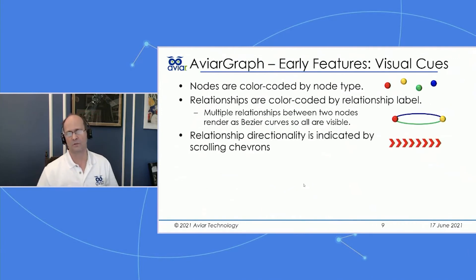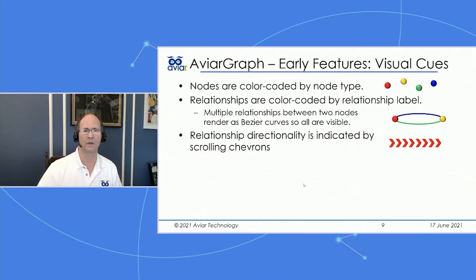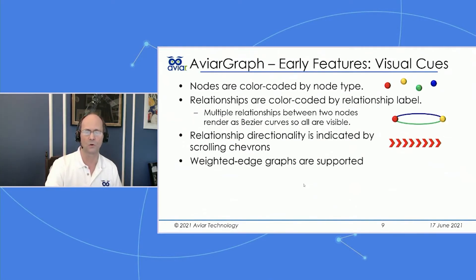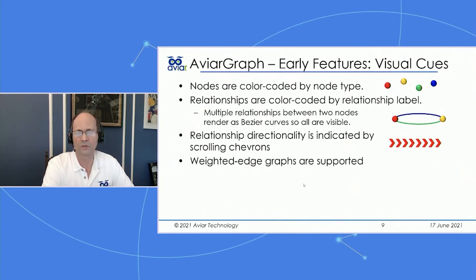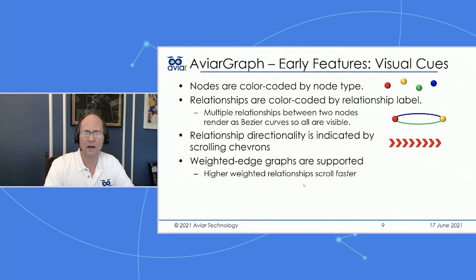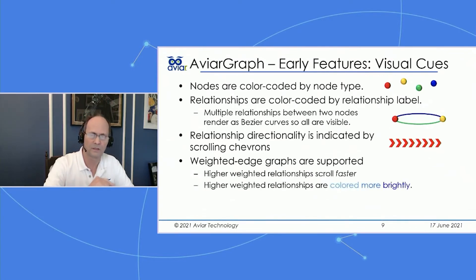Directionality — from and to — is indicated by chevrons. When in dynamic mode, chevrons actually scroll. Weighted edge graphs are also supported: if you have a property in your relationship called weight, a higher weight value causes chevrons to scroll faster and be colored more brightly, while a lower value grays them out with desaturation. You need a relationship property named weight with a non-integer value to take advantage of that feature.